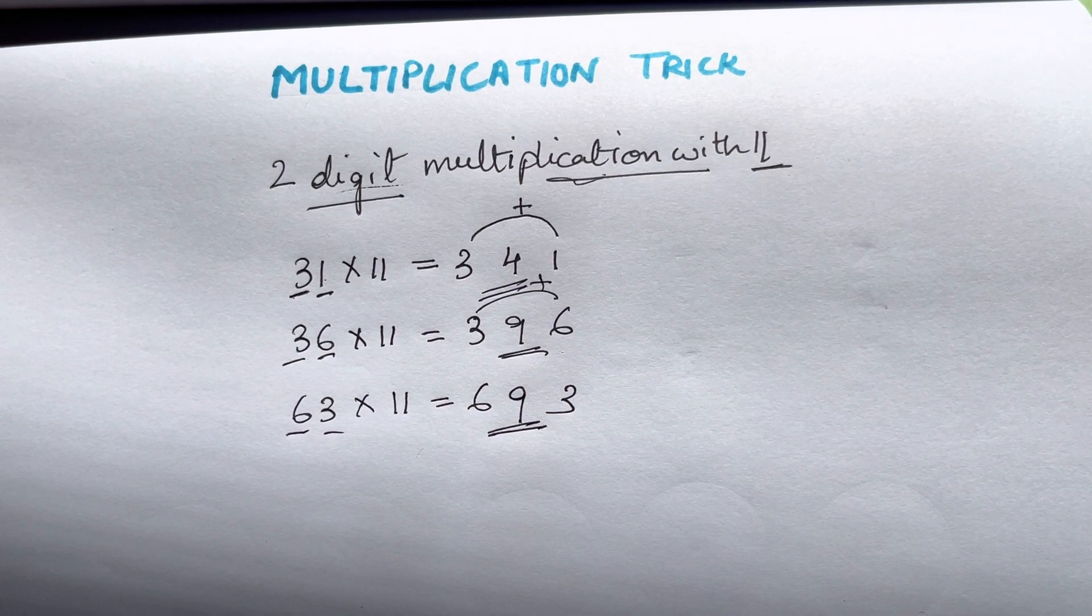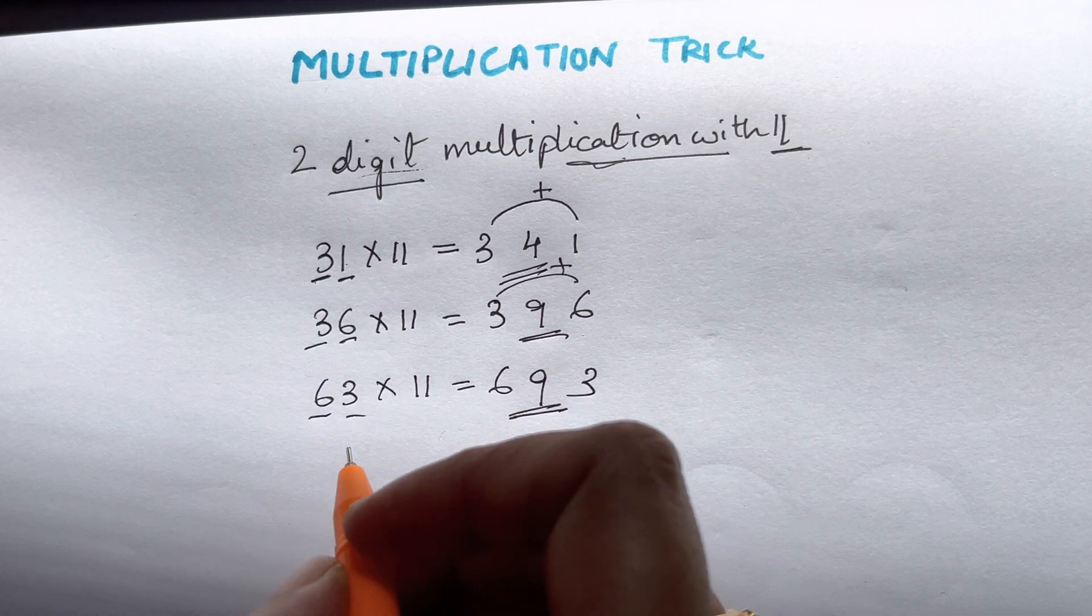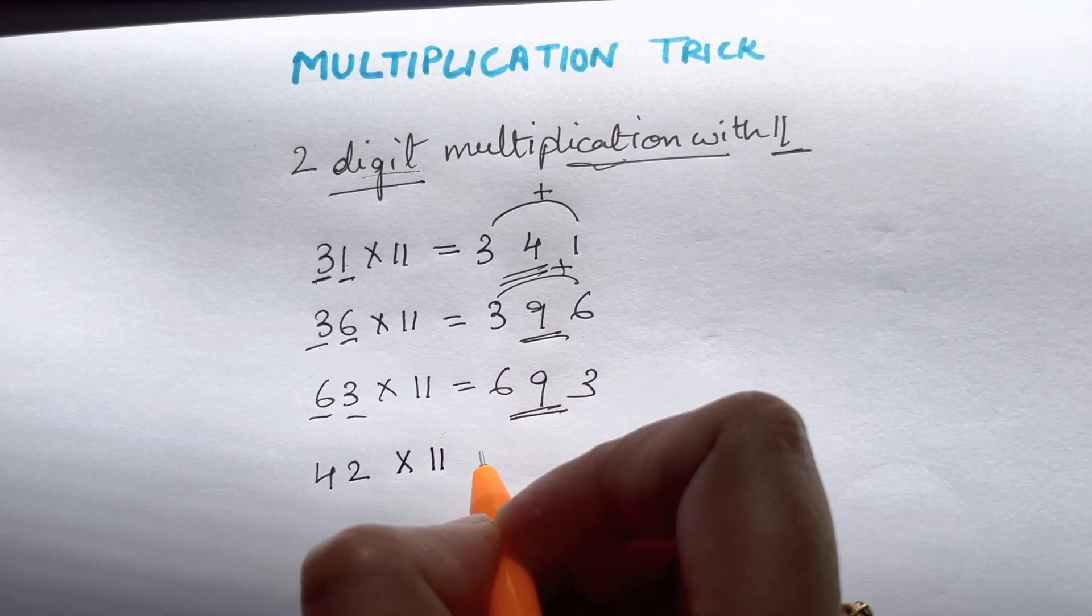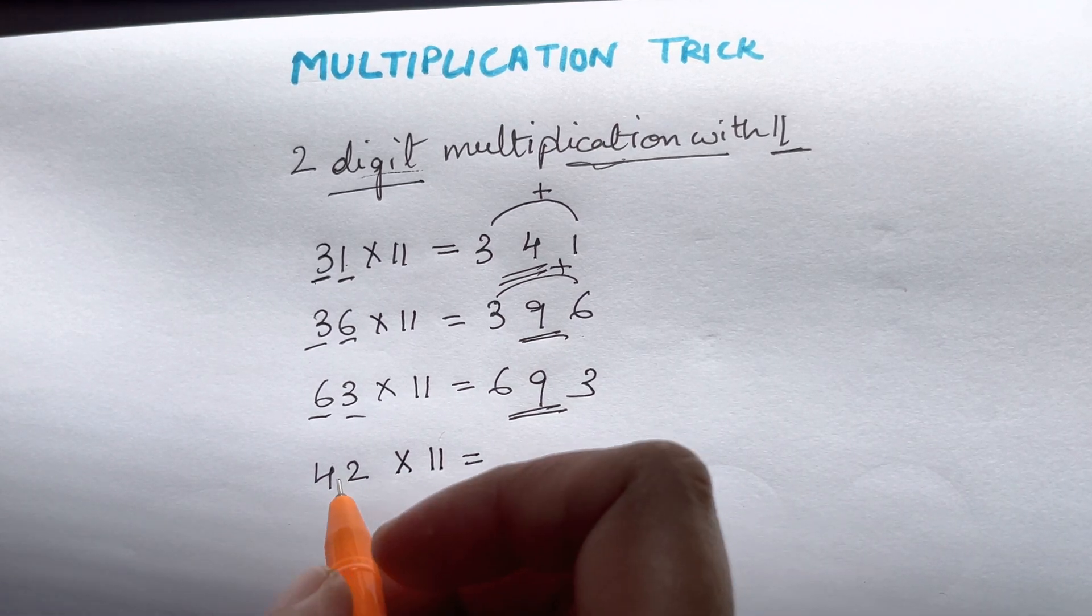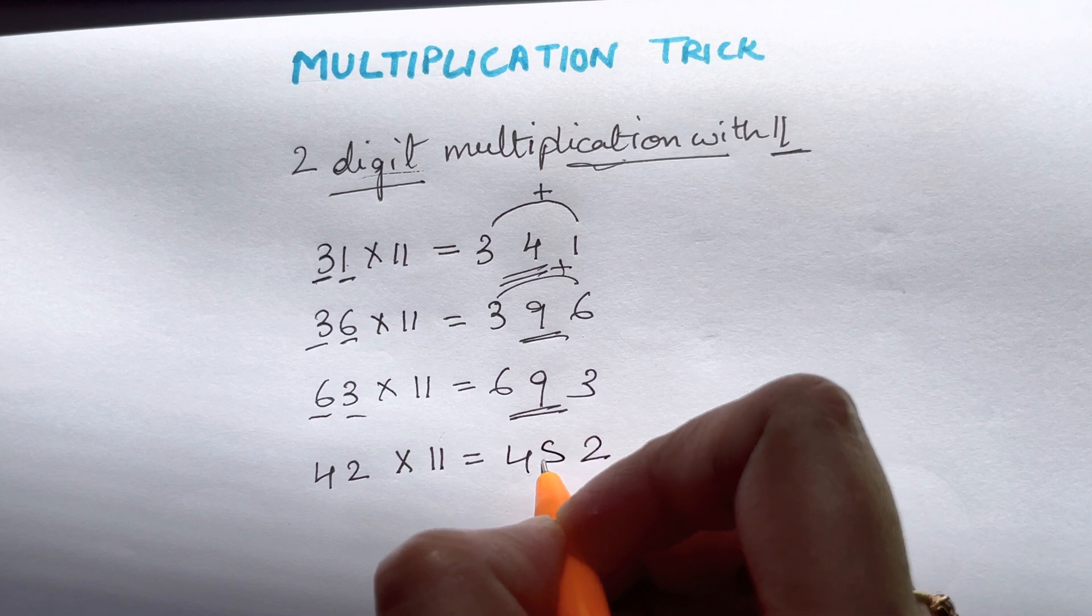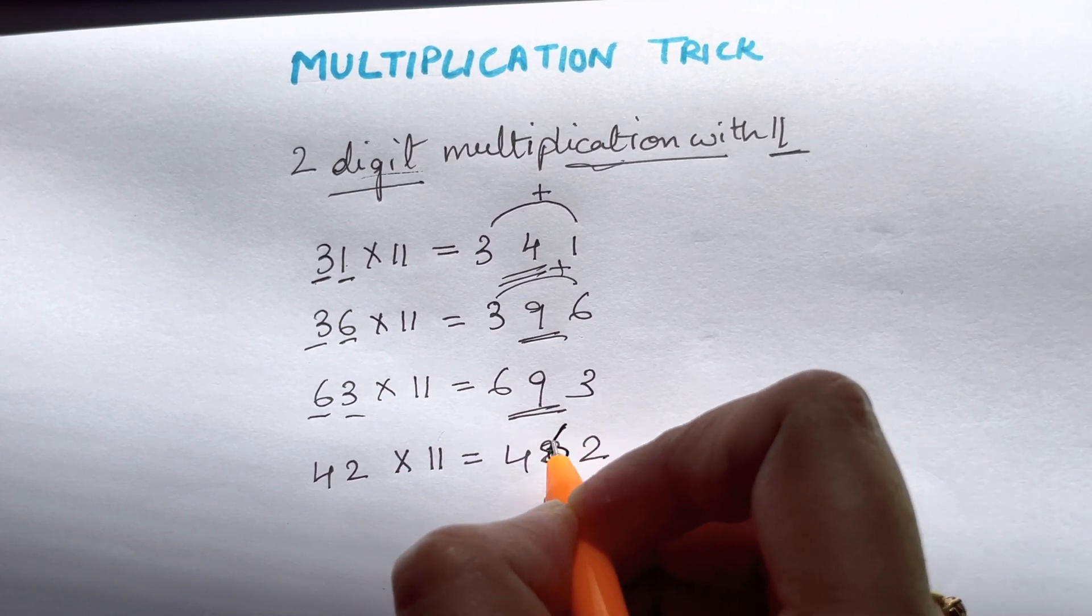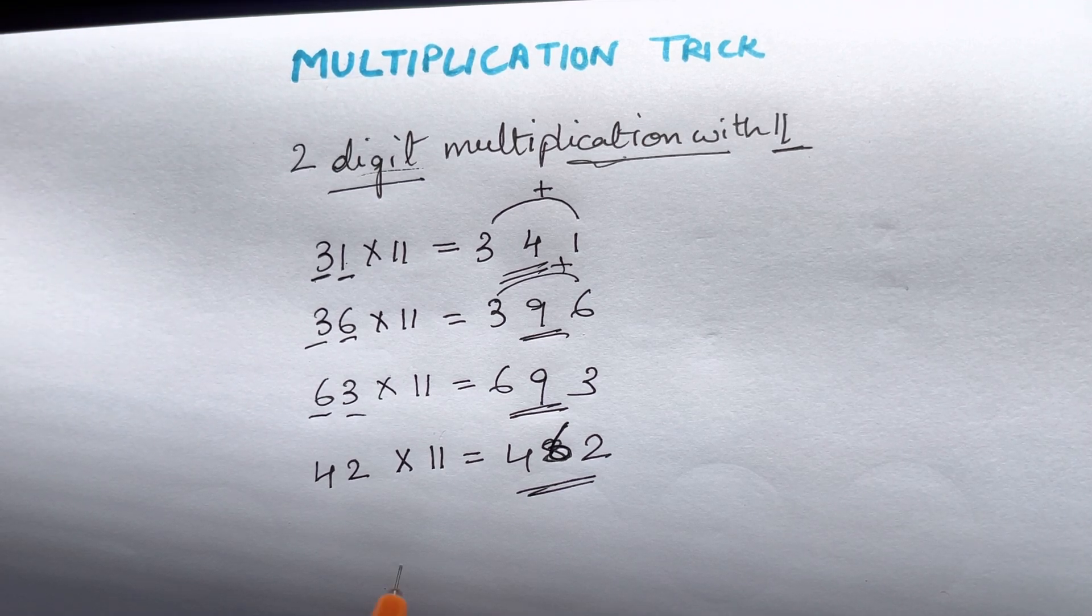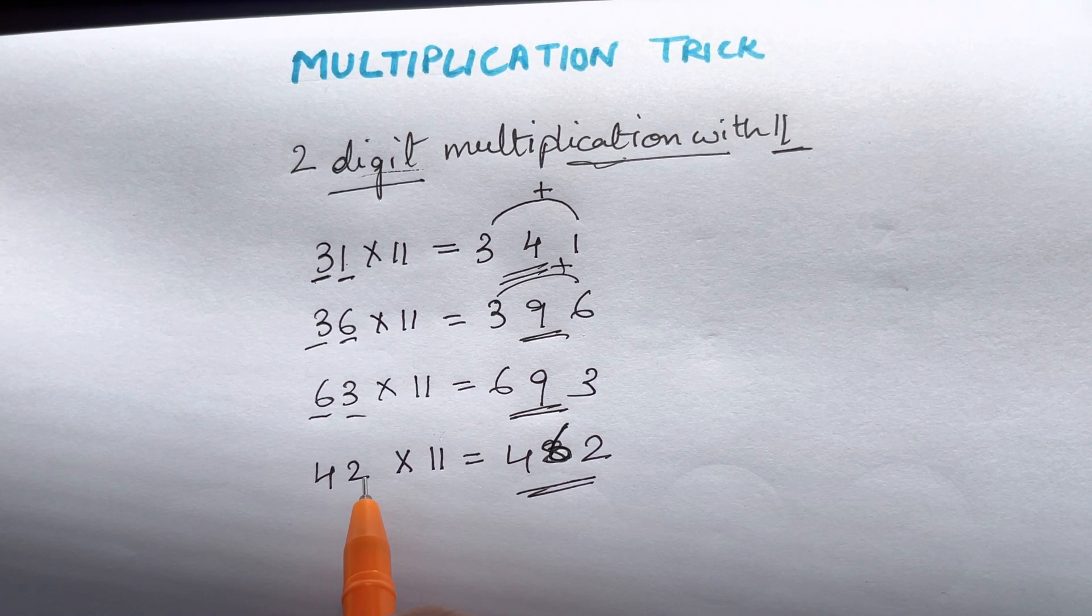Now let us try one more. You should be fast in your mind, you don't need to write down anything. 42 times 11. So 4 and 2, you'll have 6, that's 462. How did we get 6? We just added up 4 and 2, that's 6.